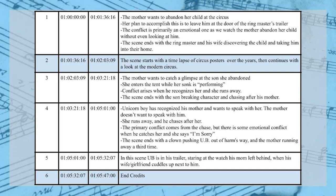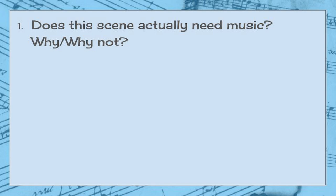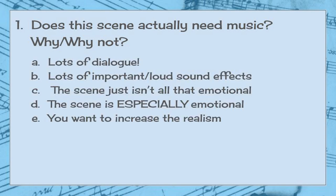Once we have our finished scene list, it's time to finally start planning the music. To do this, we're going to start re-watching each scene one at a time, typically on loop, while trying to answer a few more questions. The first one is: does this scene actually need music, and why or why not? There are a few common reasons for leaving music out of a scene. Maybe there's a lot of dialogue that you don't want to distract from. There could be a lot of important or loud sound effects and the music might make it all sound too busy. Or the scene could just not be that emotional and doesn't really need music in the first place. Or on the other end of the spectrum, the scene is really emotional and doesn't need music to help support it.